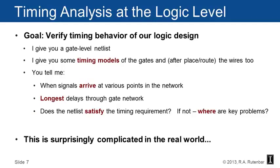If we do this analysis and find the logic is too slow — some paths are 1.05 nanoseconds instead of one — where do we look? A modern design has millions and millions of gates. It would be great if the analysis techniques pinpoint exactly where the problems are. I'm going to show you techniques that answer all of those questions, and in a possibly surprising way, answer exactly: where is my problem, and what should I focus on to fix it?